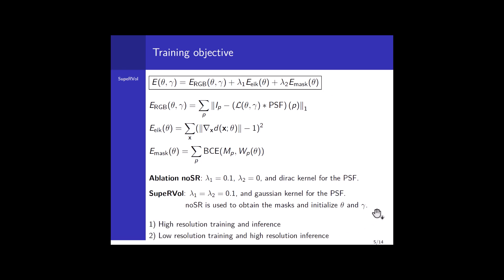For our experiments, we consider two complementary scenarios. First, we train using high-resolution images and also do inference with high resolution. Second, we train on low-resolution images and do inference on high resolution.